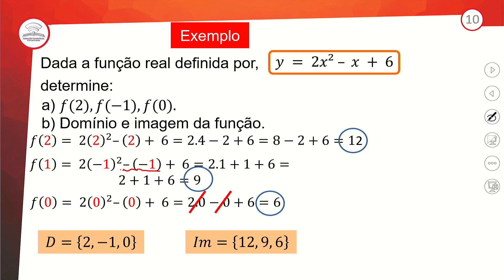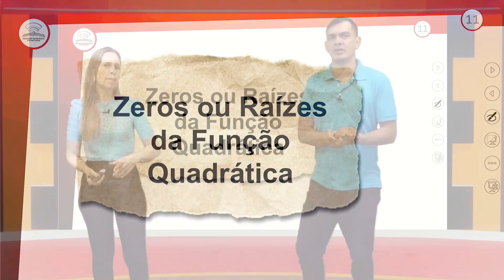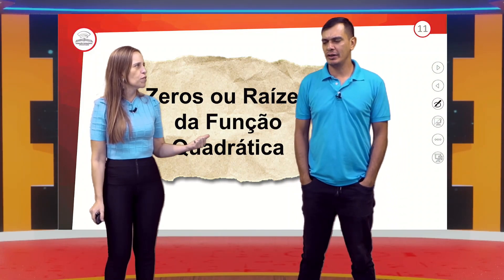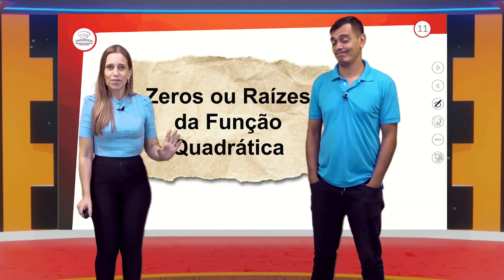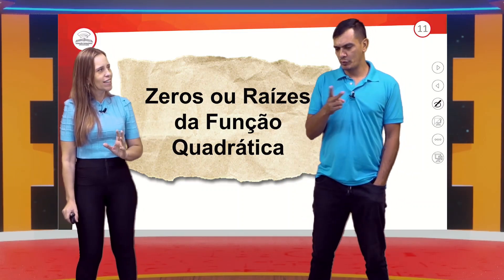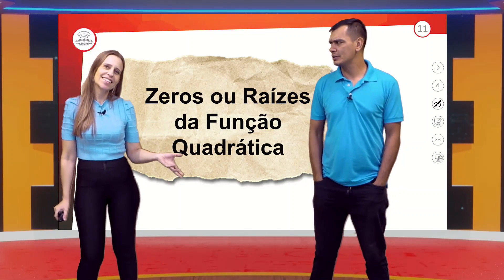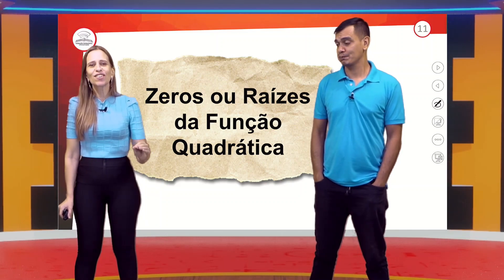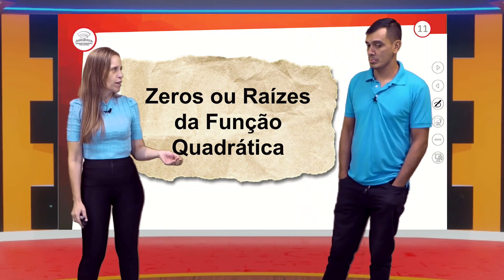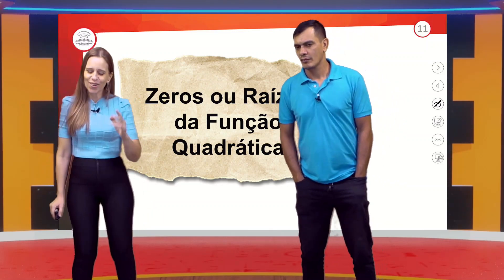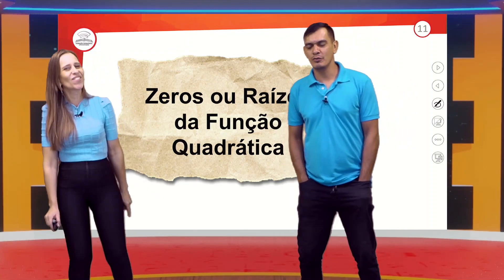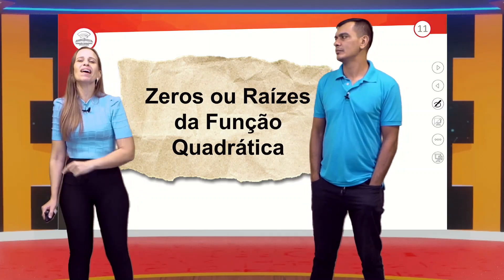Vamos falar dos zeros ou raízes da função. É o mesmo conceito da função afim — igualar a zero. Só que agora, para encontrar as raízes numa equação de segundo grau, usamos a fórmula de Bhaskara. É o poder da equação: usando o Bhaskara, a gente tem a solução. Delta = B² menos 4AC; depois X = menos B mais ou menos raiz de delta sobre 2A.